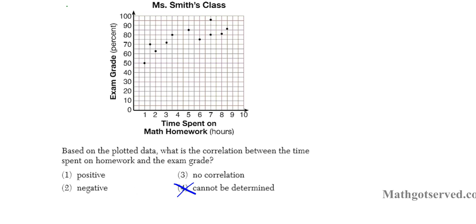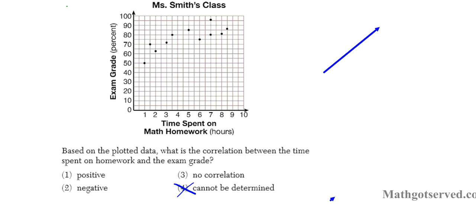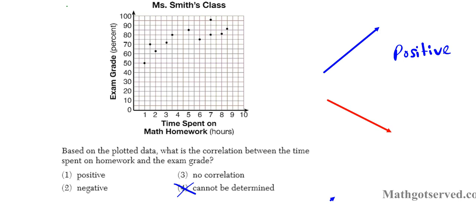Positive correlation basically means that the pattern of points are going up from left to right. Think about positive slope. If you're going from left to right and the line goes up, that's a positive slope. So if the data points are going up from left to right, you have a positive correlation, just like a positive slope.